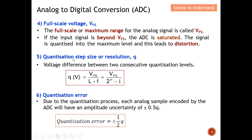Number 5, quantization step size or resolution Q. Remember, this Q is closely related to L, the quantization level, and also the number of bits. During the discussion later, I will show what is called resolution Q. Last but not least, in terms of quantization error — this is due to the quantization process. Each analog sample encoded by the ADC will have an amplitude uncertainty of ±0.5Q, which means the maximum quantization error will be ±0.5Q.